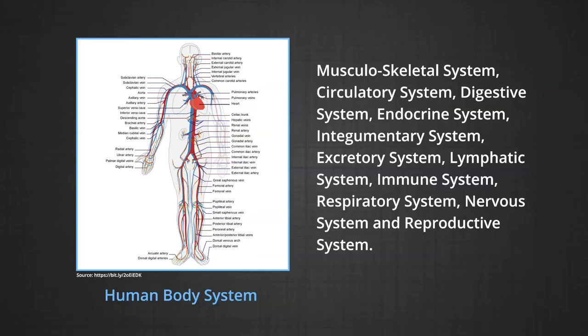Now let us see the holistic development skill. For realizing this competency, a teacher should be fully healthy physically, mentally, heartily, spiritually and environmentally. The organ systems of the body include the musculoskeletal system, circulatory system, digestive system, endocrine system, integumentary system, excretory system, lymphatic system, immune system, respiratory system, nervous system and reproductive system. An alarming number of teachers and teacher educators have many physical and mental problems.